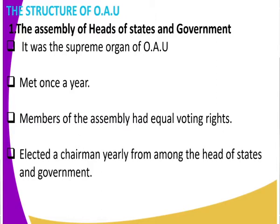Members of the Assembly had equal voting rights — they all had equal voting rights. In OAU, unlike the United Nations Organization, there was no veto power. Each and every state had one vote; for example, Kenya only had one vote. They also elected the chairman yearly among the heads of government. The host state provided the chairman — so if the meeting was in Kenya, the President of Kenya would be chairman; if in Tanzania, the President of Tanzania; if in Ethiopia, the Ethiopian Prime Minister would be chairman.